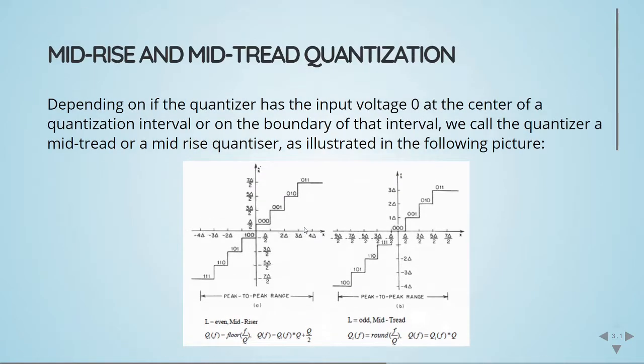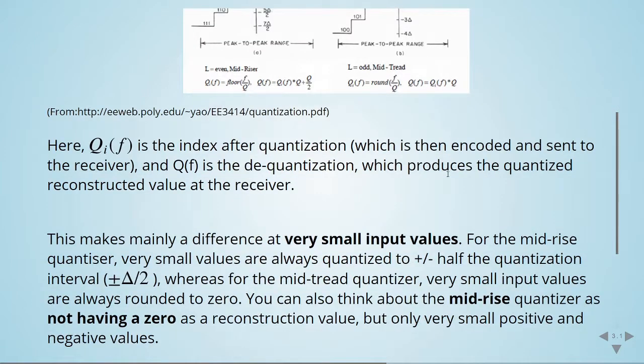So this we have then mid-rise and mid-tread quantization. This makes a lot of difference for small input values. For the mid-rise quantizer, very small values are quantized to plus or minus half the quantization interval, half of the step size. And for the mid-tread quantizer, very small input values are rounded to zero.